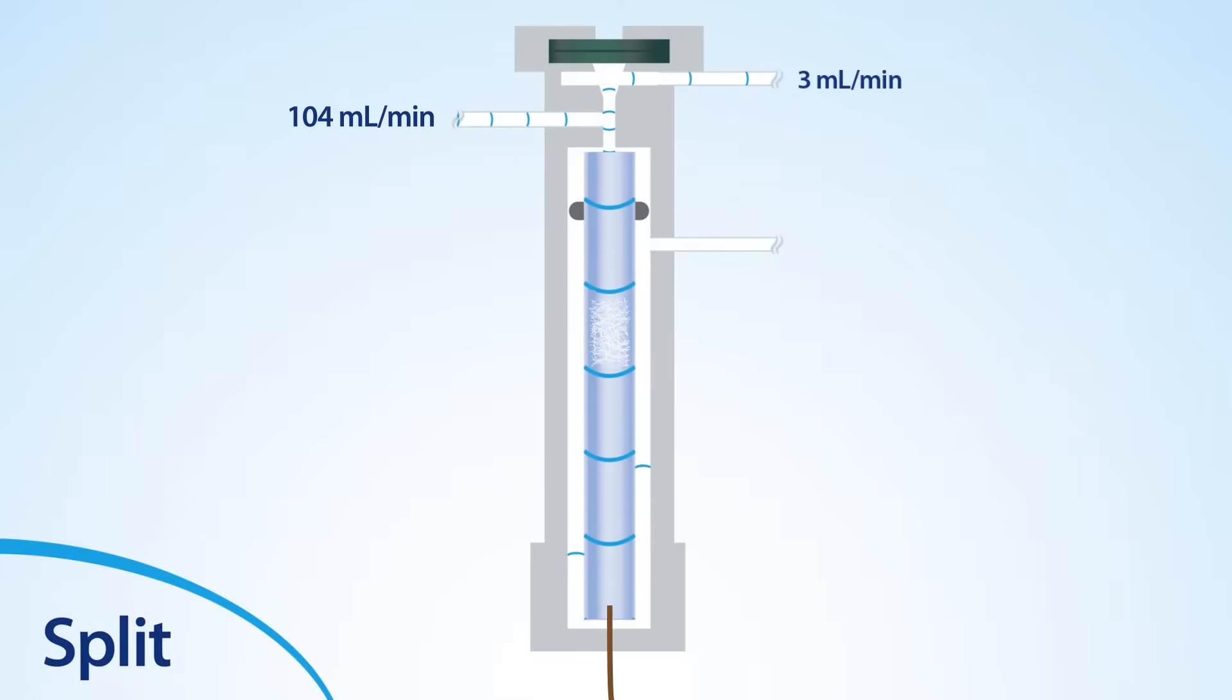A fraction of the gas, 1 mL per minute, flowed into the column, but most, 100 mL per minute, is swept away via the split vent.